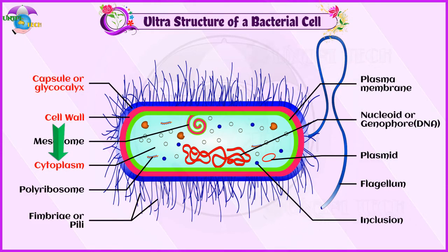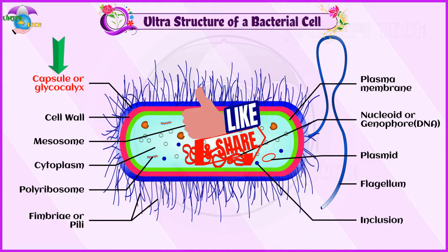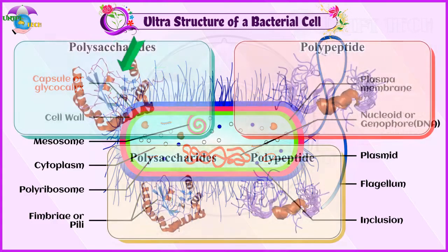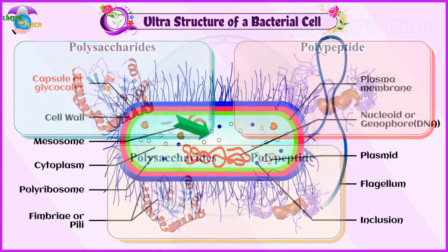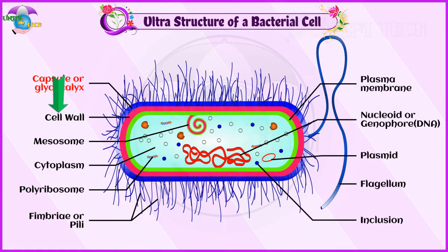Capsule or glycocalyx: Some bacteria are surrounded by a gelatinous substance which is composed of polysaccharides, polypeptides, or both. The thick layer of glycocalyx bound tightly to the cell wall is called the capsule.